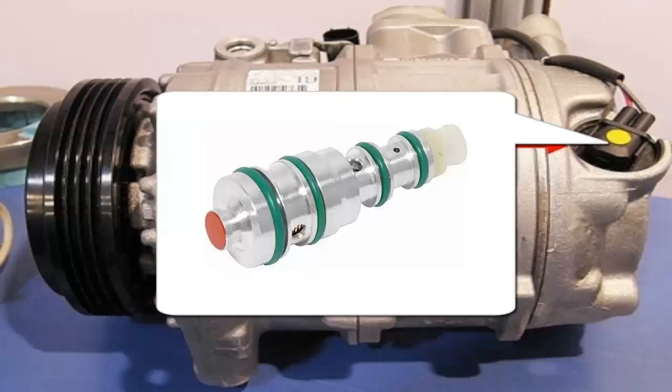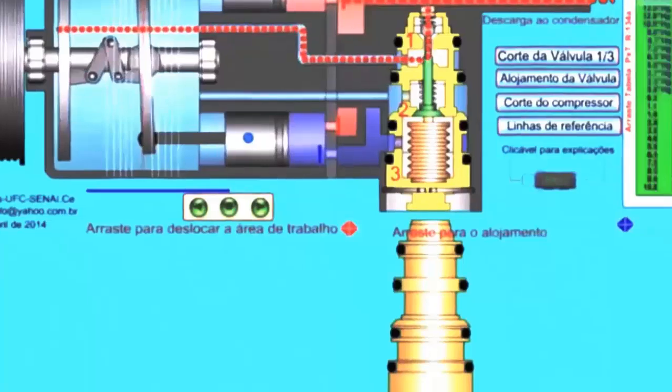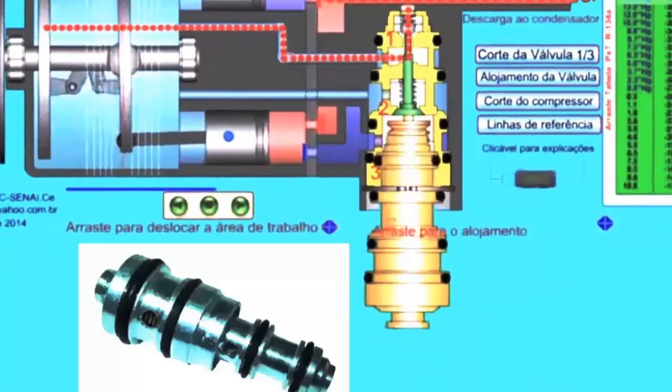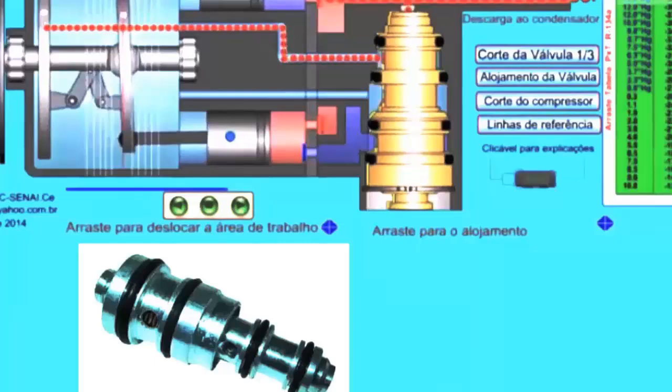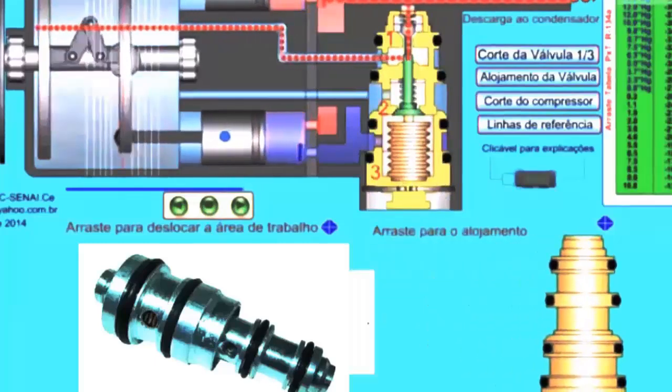After changing the POA valve, a vacuum should be performed and the refrigerant should be recharged. Remember to avoid letting moisture enter the system by not leaving the equipment exposed to outside air for too long.